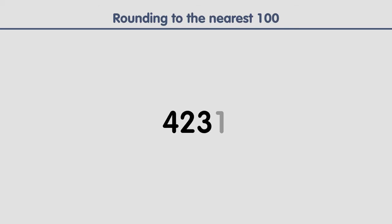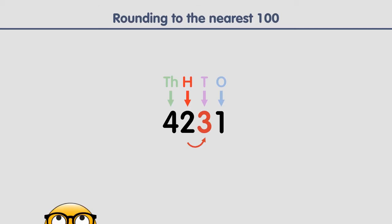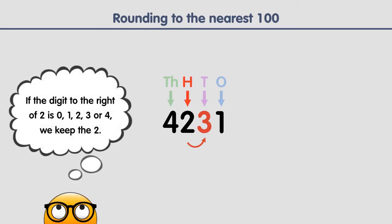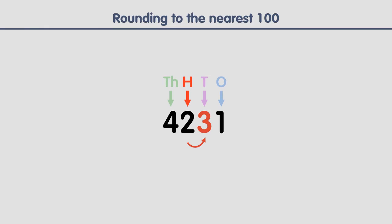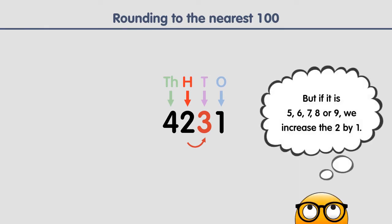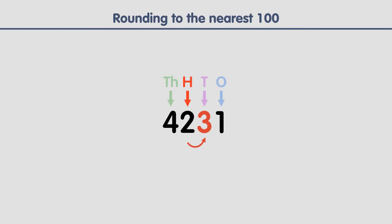To round a number to the nearest one hundred, the first step is to identify the digit in the hundreds place. Ones, tens, hundreds, and thousands — the digit in the hundreds place is two. The second step is to look at the digit to the right. If that digit is less than five, we keep the two; if it's greater than four, we increase the two by one. In this case it's a three, so we keep the two. The third step is to replace any digits to the right of the two with zeros. This is the result.